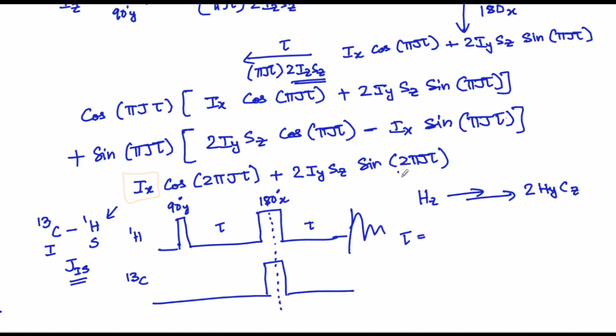If you smartly set your τ value such that 2πJτ equals π/2, this indicates τ is equal to 1/(4J).